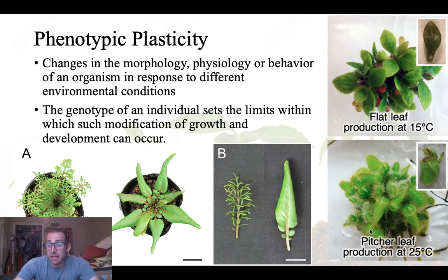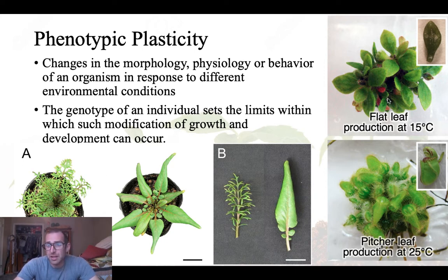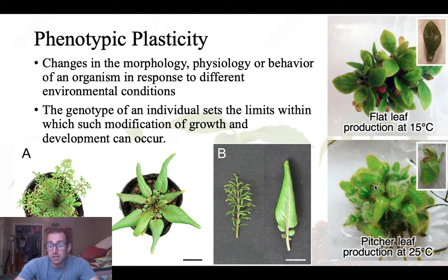Another example is the pitcher plant — we have pitcher plants in New Jersey in the Pine Barrens. These Australian pitcher plants also show temperature-related development: they develop flat leaves at colder temperatures and pitcher-shaped leaves that trap insects at warmer temperatures.